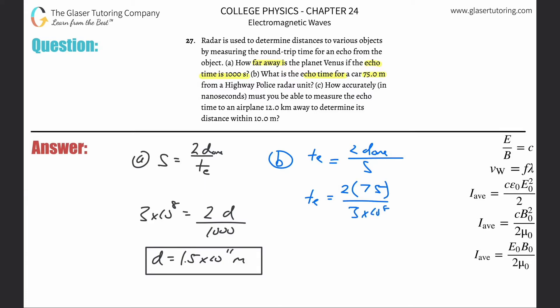Again, it's the speed of light. So the echo time here will be 2 times 75, all divided by then 3 times 10 to the 8. So about 5 times 10 to the minus 7 seconds. That's the echo time.